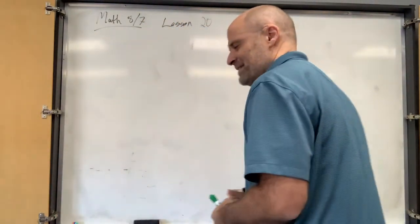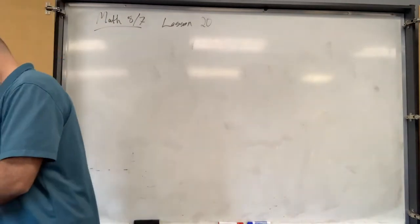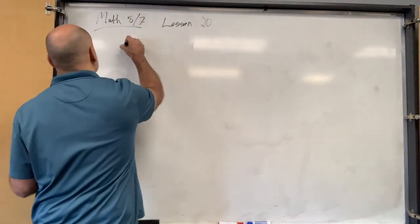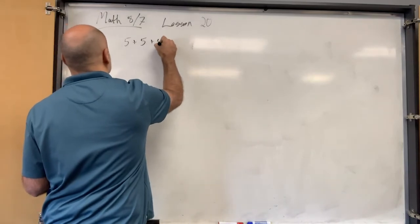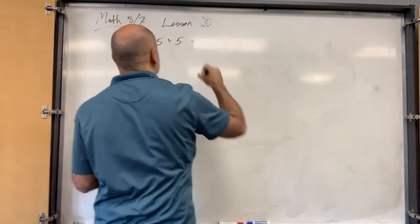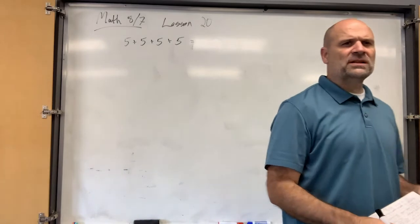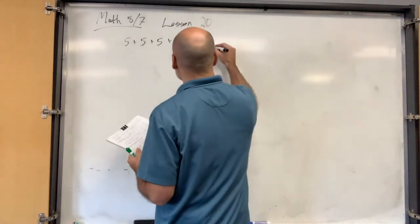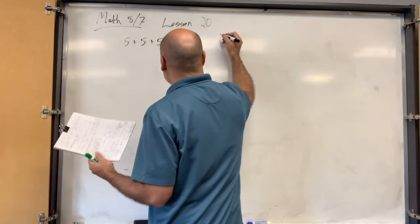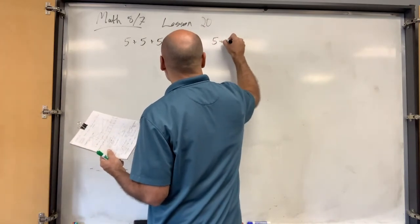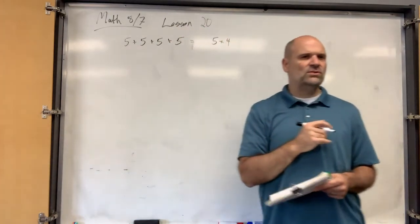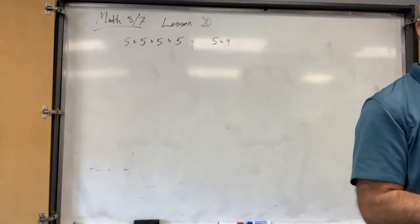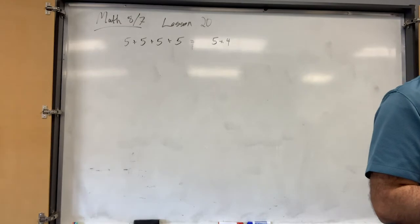Lesson 20. Is there a faster way to do this problem? 5 times 4. You could add it all together, but this is just 5 times 4. This is the shortcut to addition, right? When you're adding the same thing a multiple number of times, that's called multiplication.